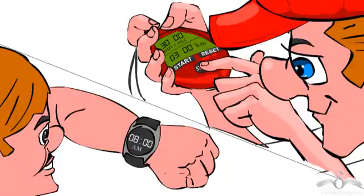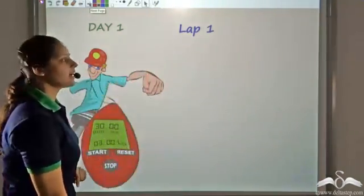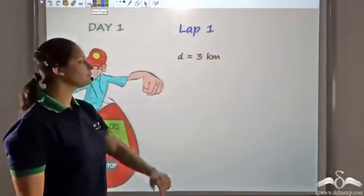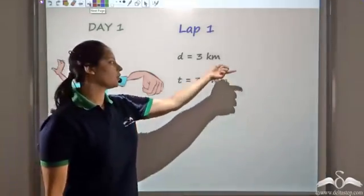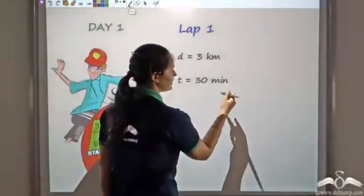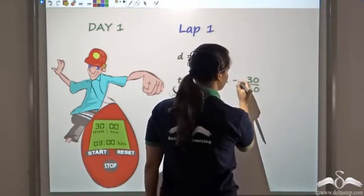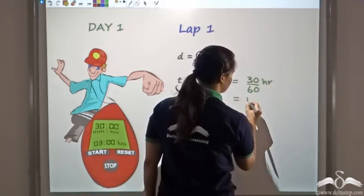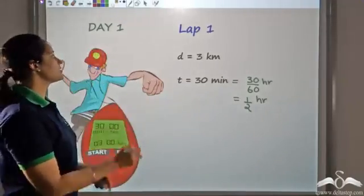So what we observe is: for Day 1, Lap 1 — the first lap he ran was 3 km, that was the distance. If we look at the time he took, he took 30 minutes to cover this 3 km. If I want to write 30 minutes in hours, it would be 30 by 60, which is half an hour. So it took half an hour to cover 3 km.